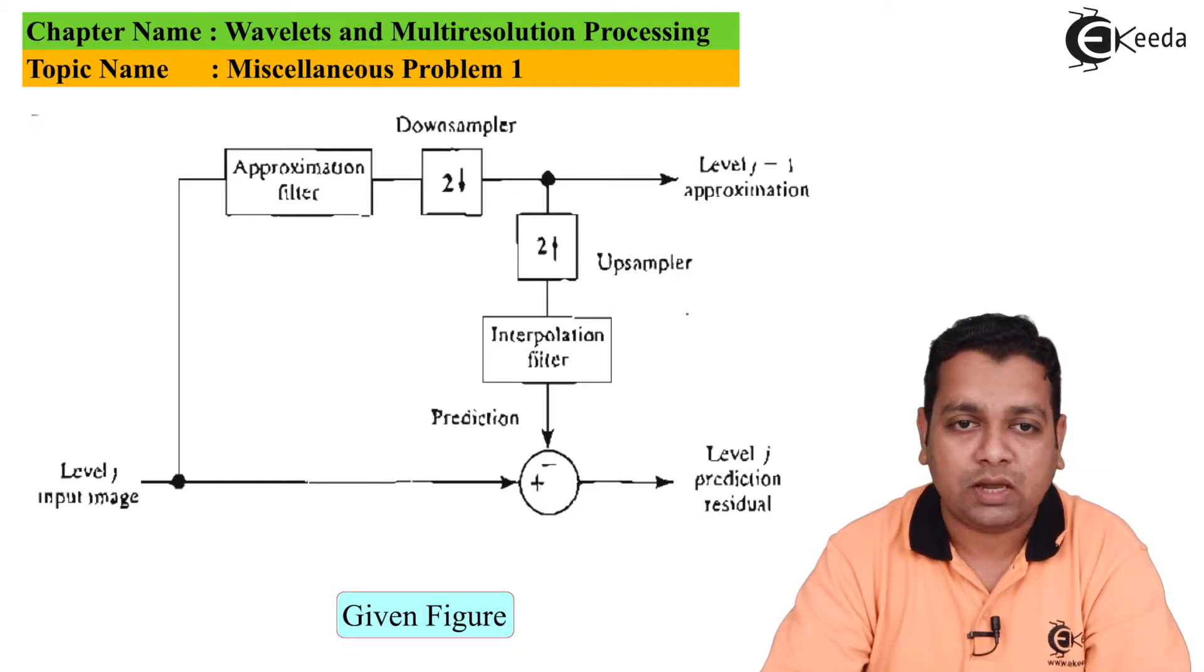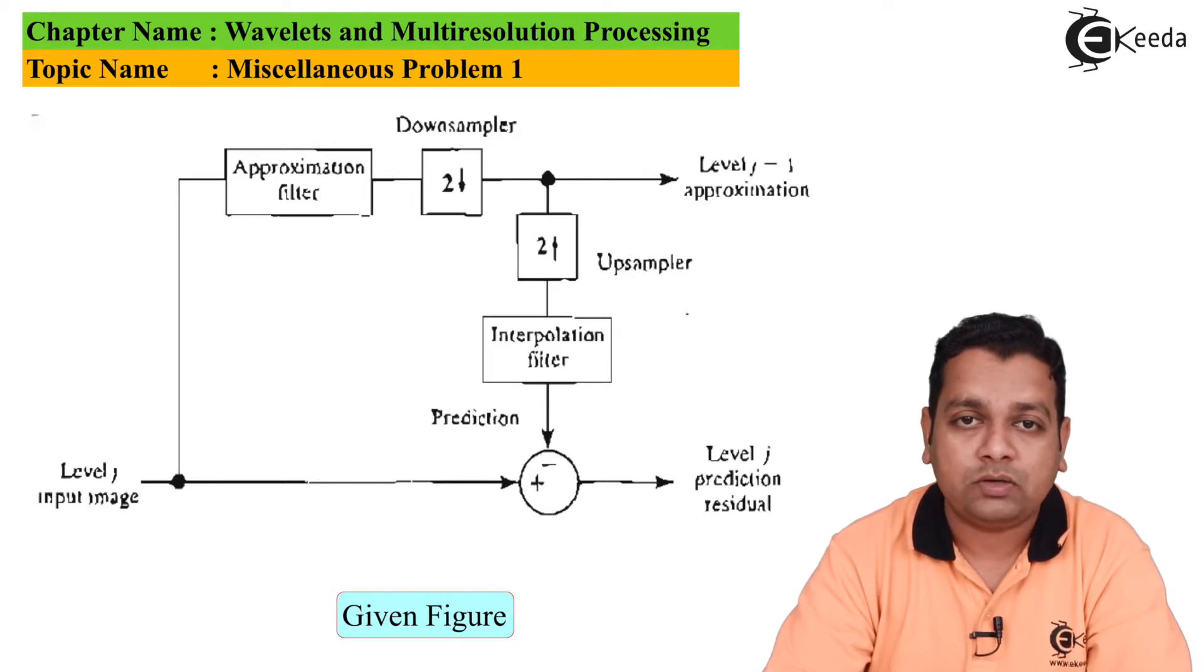This is the input provided as level J. It is fed to the approximation filter on this particular path and to the summer directly on this path.